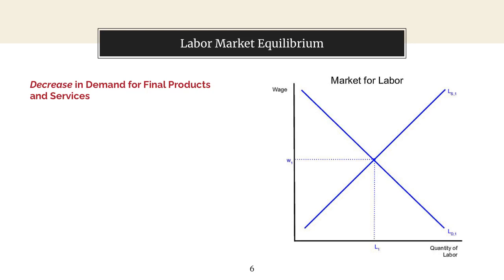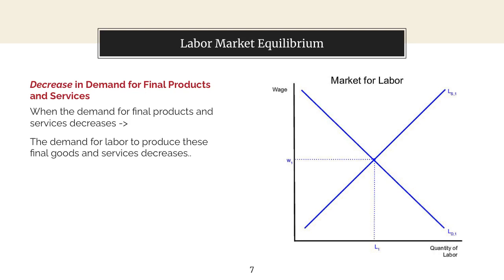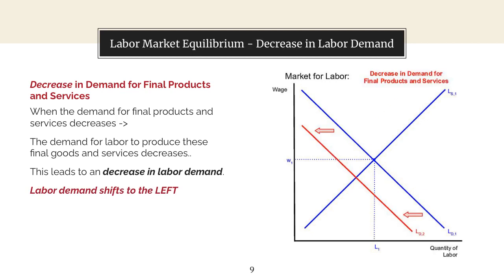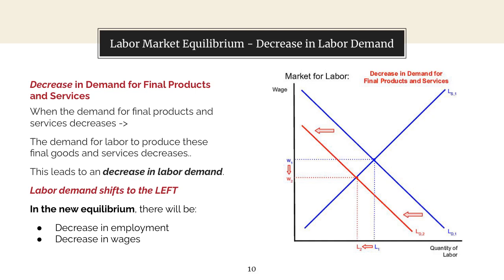Let's look at what happens when there's a decrease in demand for final products and services. When the demand for final products and services decreases, then the demand for labor to produce those final goods and services decreases. Therefore there's a decrease in labor demand and labor demand shifts to the left from LD1 to our red LD2. In our new equilibrium, labeled W2 and L2, we can see a decrease in employment and a decrease in wages.